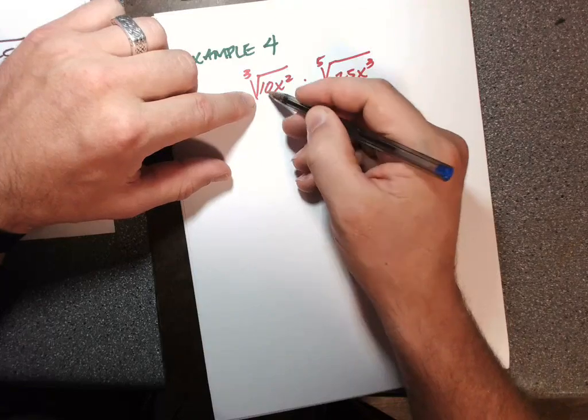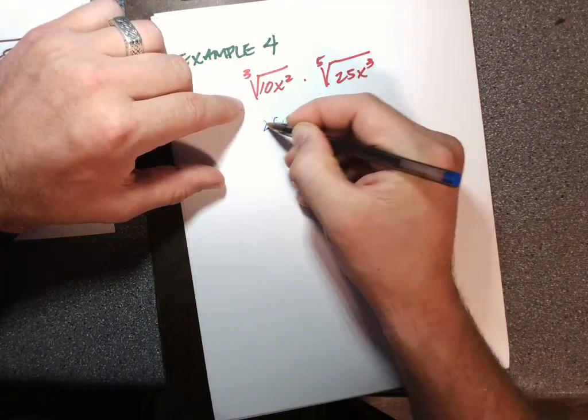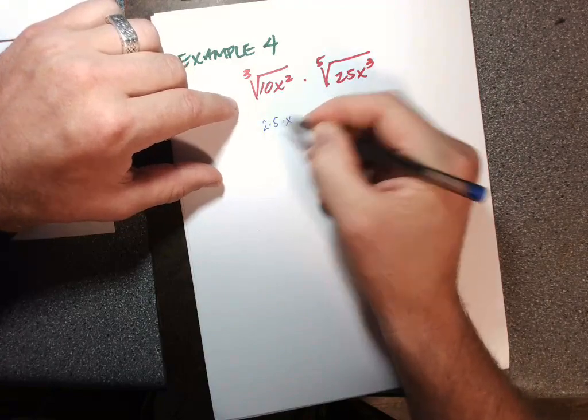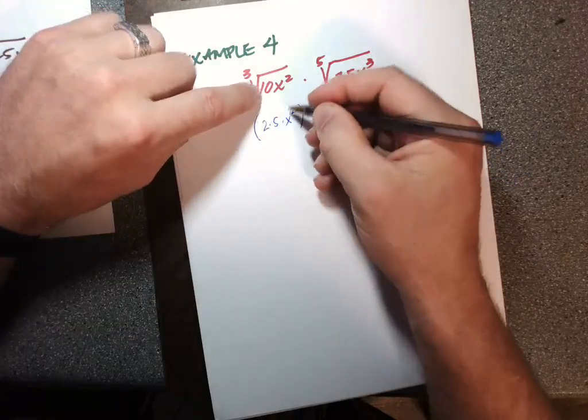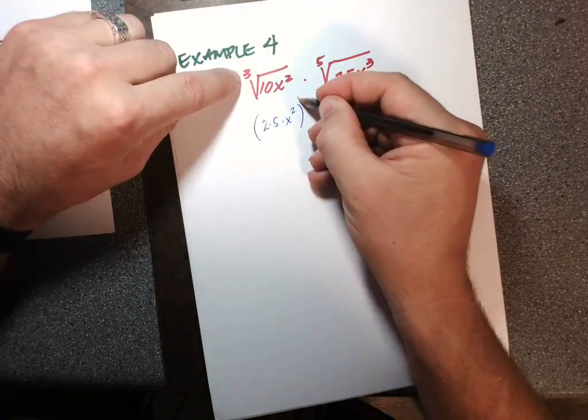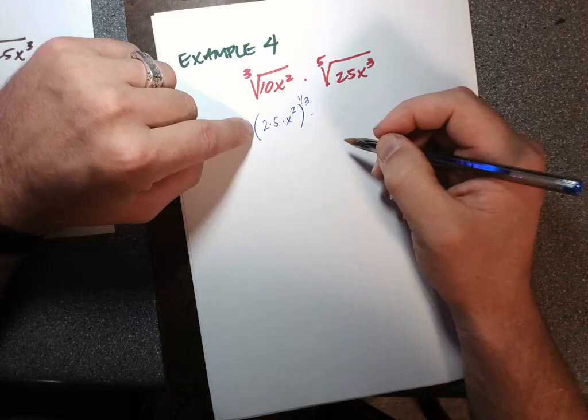And then 10, I'm gonna make that immediately here 2 times 5, so that we're prime factorizing those. All right, so this is the inside part, but it's the cube root, which is equivalent to the one-third exponent, so those are the same thing, although different looking.